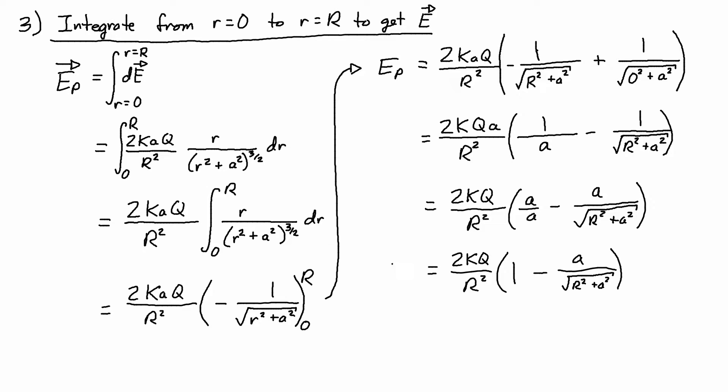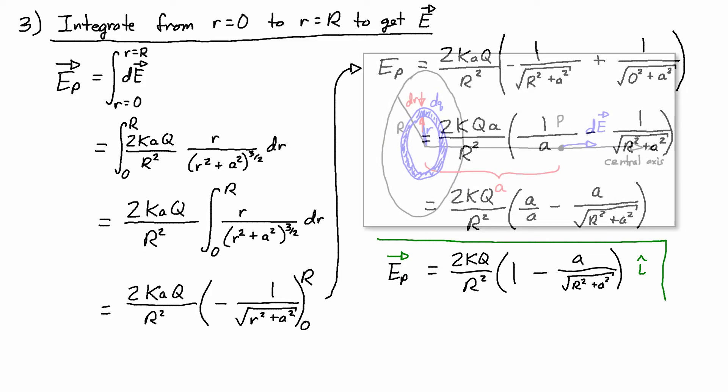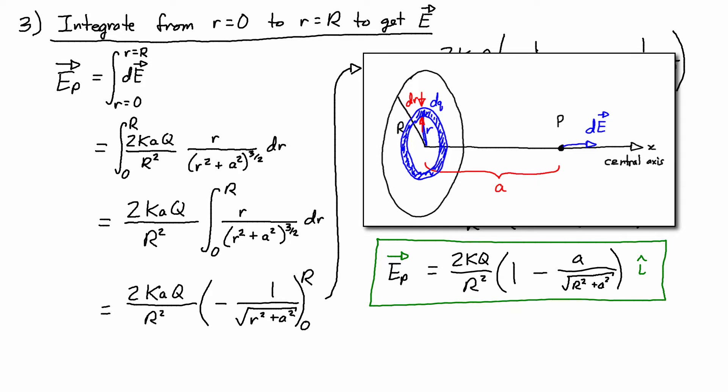And that gives the magnitude of the field, and that's the simplest form that I can get right now. And again, because the electric field is a vector, I would give that the direction i hat, according to the diagram that I used when I set up this problem.